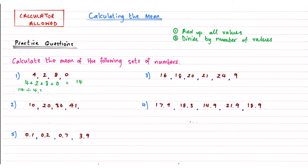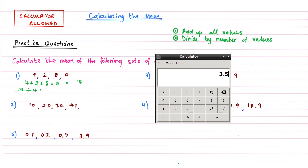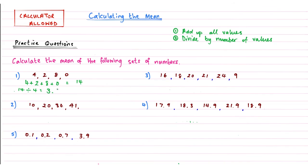Now 4's don't easily go into 14 and I know that because it's not a times table fact. So I'm going to have to use a calculator for this, which is fine because calculators are allowed. So let's just quickly type that in. So 14 divided by 4, and there we are. It gives me a mean of 3.5. So we'll write that down. And to finish off our working, the mean equals 3.5. So that's question 1.